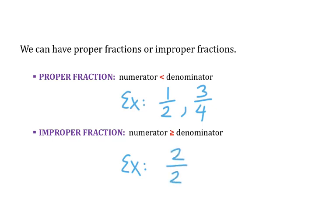2 over 2 is improper. This is an example where the numerator is equal to the denominator, and that's why it's improper. Another example could be 5 over 4. In this case, 5 fourths is improper because 5 is greater than 4.